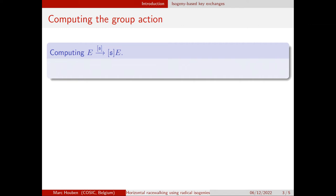These secrets of Alice and Bob correspond to maps between elliptic curves that we call isogenies. These maps typically have a very large degree, but they decompose into lots of smaller maps of smaller degrees. So essentially, computing the group action boils down to computing chains of isogenies of small degree.